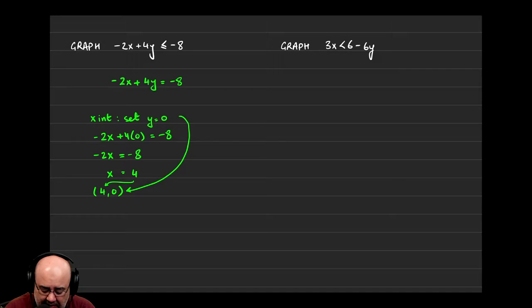4, the one that we just solved, and 0 is what we plugged in to get the 4. So that's my x-intercept, that's where the line crosses the x-axis. In order to find the y-intercept, we set the x-coordinate equal to 0.